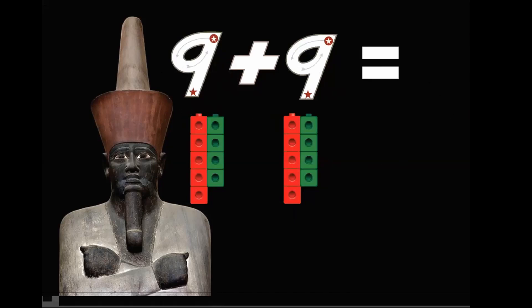How do we draw nine using African numerals? We have nine units. We have nine tick marks. Exactly. Nine tally marks. So nine ticks. Very good.